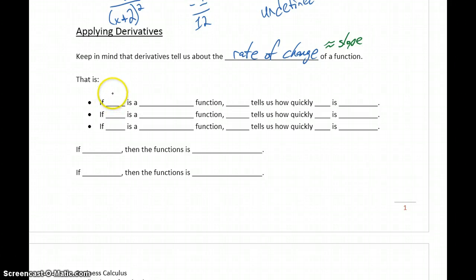If we're dealing with a function c of x, let's say that's a cost function, then c prime of x, the derivative of that cost function, tells us how quickly our costs are either increasing or decreasing, or to put that more simply, how quickly our costs are changing.